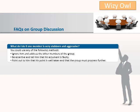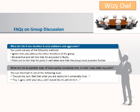What do I do if one member is very stubborn and aggressive? In such a situation, you could use any of the following methods: either ignore him and address the other members of the group, or be assertive and tell him that his argument is faulty, or point out to him that his point is well taken and the group must progress further. What are the acceptable ways of interrupting somebody else so that I may make my point? You can interrupt by saying 'Excuse me, but I feel that what you are saying isn't universally true,' or 'Yes, I agree with your idea and I would like to add on to it.'